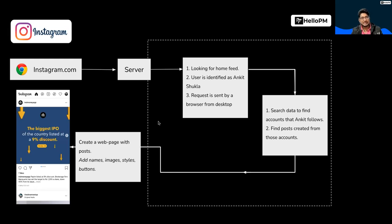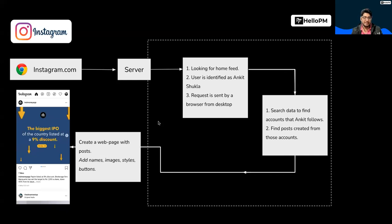Harshit has a good analogy. Imagine you've gone to a restaurant and ordered a dish — the chef mixes everything and gives you a ready-made dish. That is an example of server-side rendering: everything happened at the back-end and you just eat. On the other hand, if you order a ready-to-eat meal where you take it home, compile it, prepare it, cook it, and then eat it — that is the example of client-side rendering.